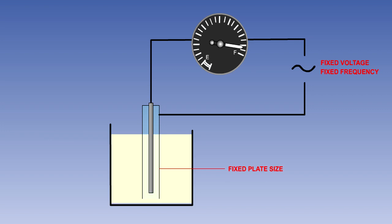In our circuit, three of these factors are fixed and the fourth, the dielectric constant, is variable because the dielectric consists of fuel and air.